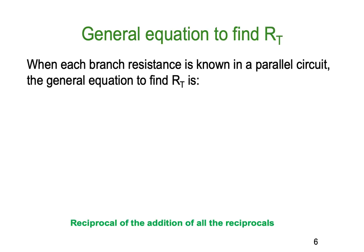The general equation to find R total when each of the branch current is known in a parallel, the general equation to find R is: Now this looks very complicated but it's not as complicated as you might think. You can see across the bottom screen there I've written reciprocal of the addition of all the reciprocals.